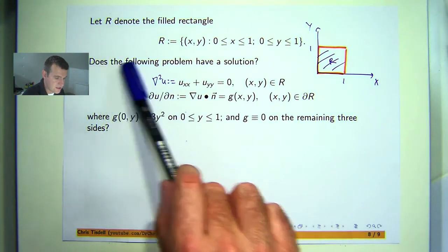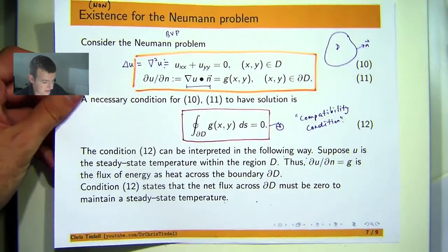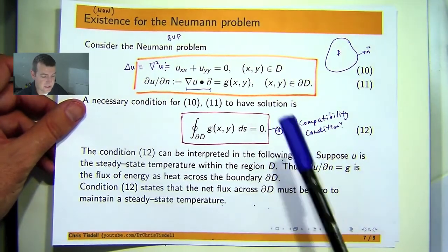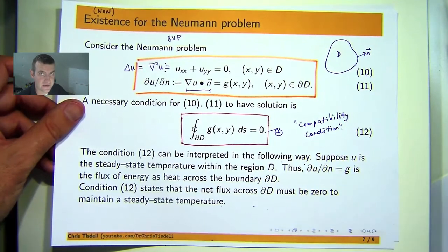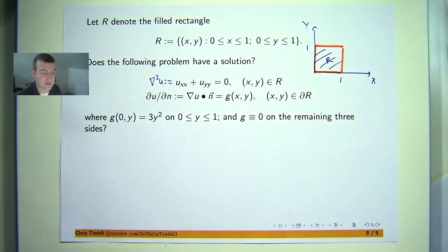The question is: does the following problem for that g have a solution? Now if we're going to apply the previous result, then the only answer we can give using this idea is the negative answer. We can only use this idea to show that the problem doesn't have a solution.